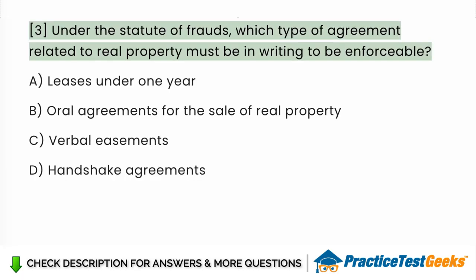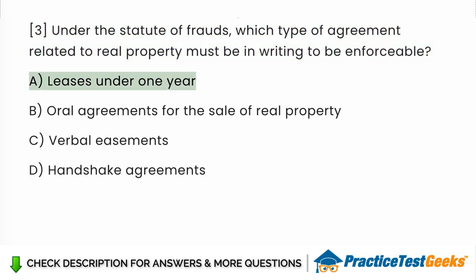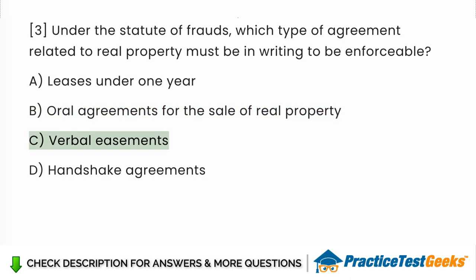Under the statute of frauds, which type of agreement related to real property must be in writing to be enforceable? a. Leases under one year. b. Oral agreements for the sale of real property. c. Verbal easements. d. Handshake agreements.